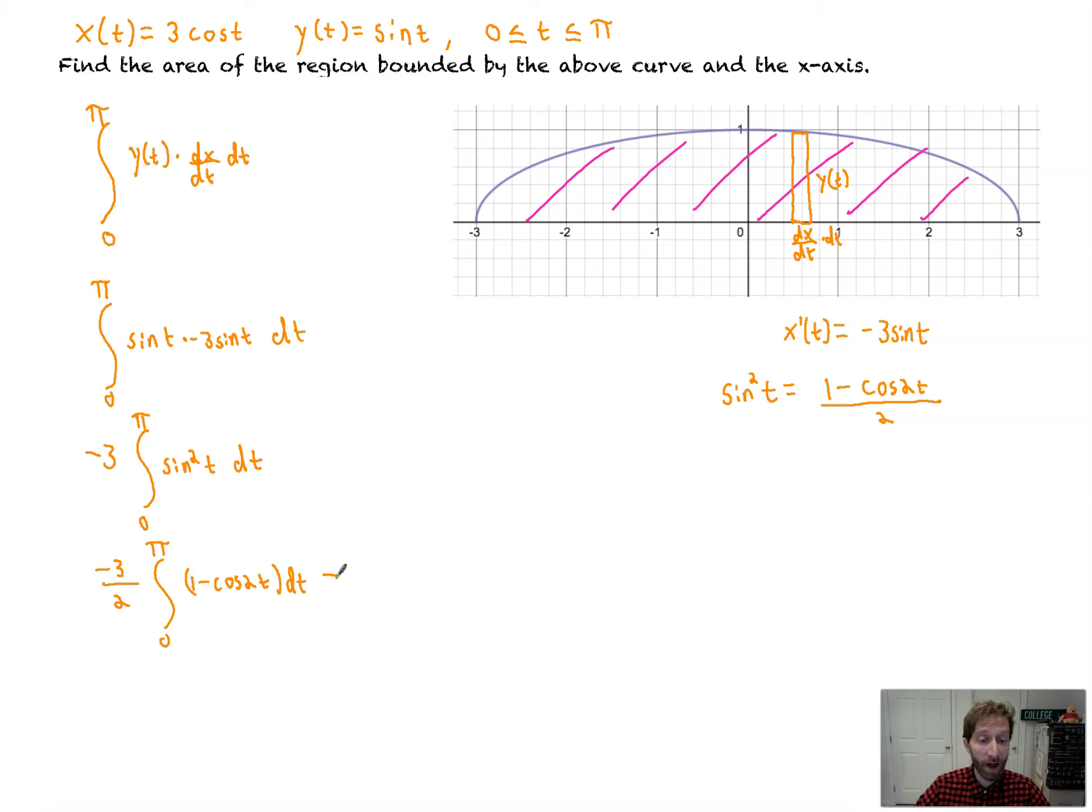It's negative 3/2 from 0 to π of (1 - cos(2t)) dt. All right, so we're just going to evaluate this. Just keeping in mind that this is straight-up integration at this point.